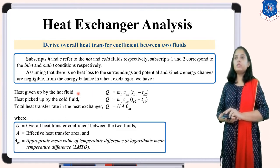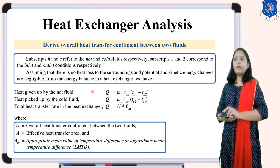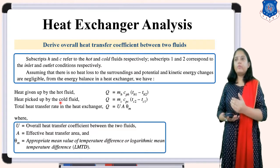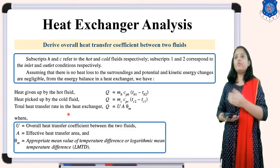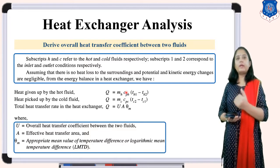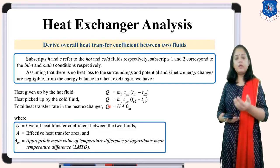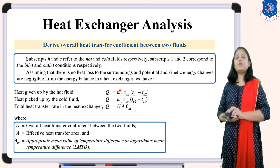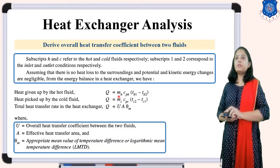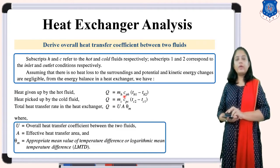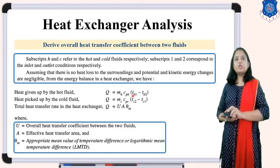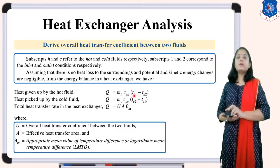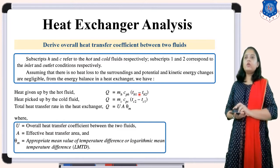The energy balance in the heat exchanger for the hot fluid: when the hot fluid gives heat to the cold fluid, Q = Mh · Cph · (TH1 - TH2), where Mh is mass flow rate of hot fluid, Cph is specific heat of hot fluid at constant pressure, and TH1 - TH2 is the temperature drop of the hot fluid from inlet to outlet.